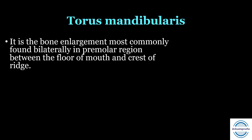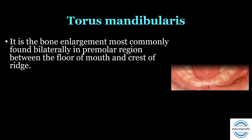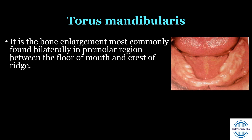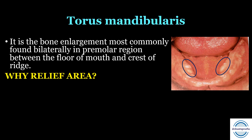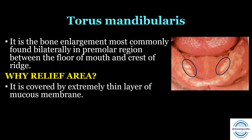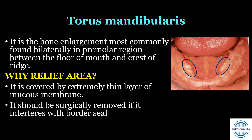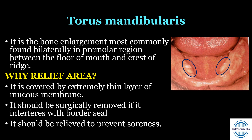The next is the torus mandibularis — a bony enlargement most commonly found bilaterally in the premolar region, between the floor of the mouth and the crest of the ridge. It is covered by an extremely thin layer of mucous membrane. Either it should be surgically removed if it interferes with the border seal of the denture, or it should be relieved to prevent any soreness.